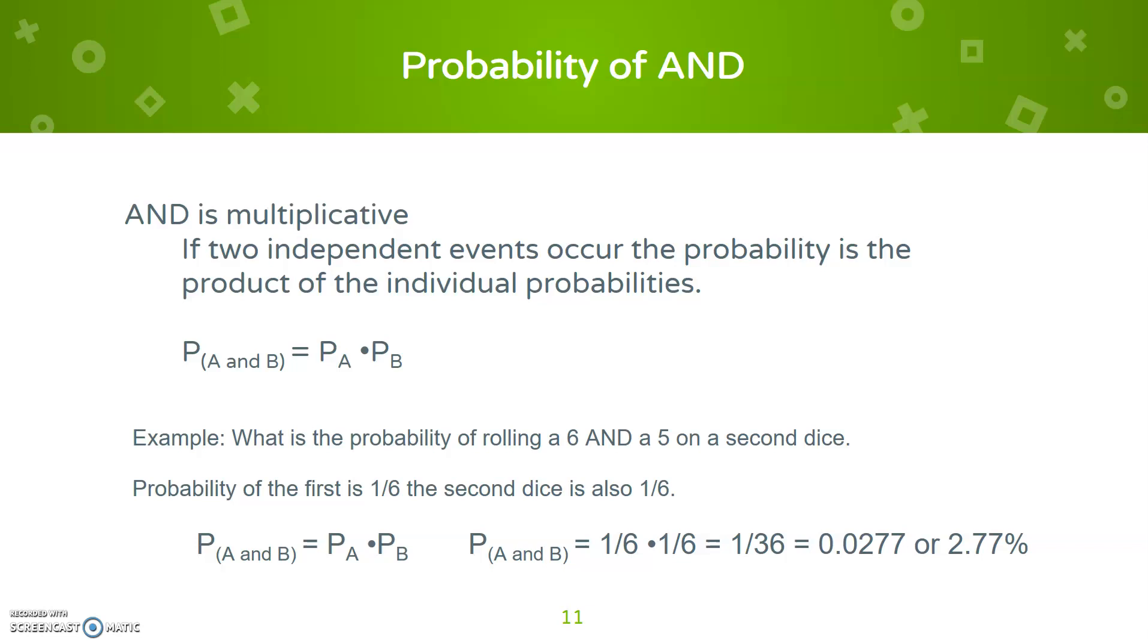If you roll, that's going to be one-sixth on your first dice and the second is another six. So we can take those two, one-sixth and multiply them. One-sixth times one-sixth gives you one-thirty-sixth or 2.77%.